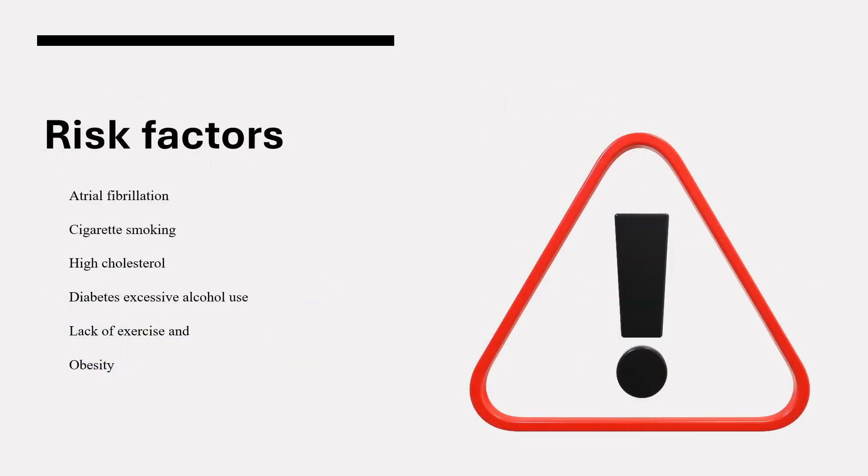Risk factors that can contribute to a stroke include atrial fibrillation, cigarette smoking, high cholesterol, diabetes, excessive alcohol use, lack of exercise, and obesity. But of all these risk factors, the most important controllable risk factor for stroke is high blood pressure. High blood pressure, classified as systolic over 140 or diastolic over 90, can damage blood vessels that supply blood to the brain. Reducing the systolic by 12 to 13 points can decrease the risk for stroke by 37%.